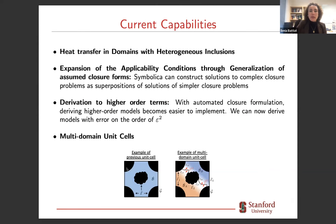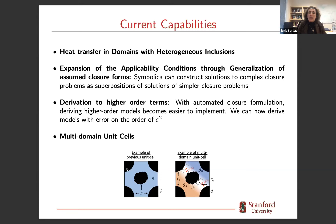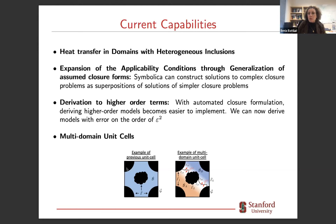Current capabilities include handling heat transfer in domains with heterogeneous inclusions — we applied this to model thermal runaway in battery packs. We also expanded the applicability conditions by generalizing the assumed closure form. Symbolica can now postulate solutions for the closure variable that are much more sophisticated than I would have guessed by hand, using the concept of superposition. This leads to upscaled PDEs that look very different from what we would expect, but are valid even in highly reactive systems — for Damköhler numbers much larger than we could upscale before.